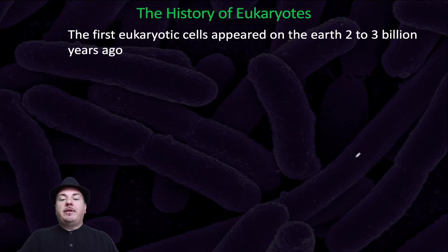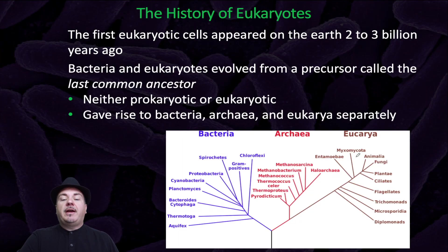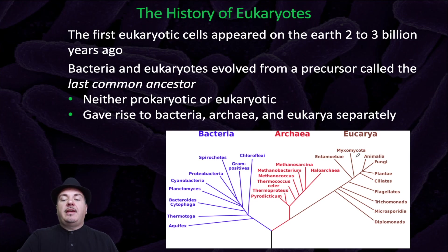The first eukaryotic cells appeared on the earth two to three billion years ago. Bacteria and eukaryotes evolved from a precursor called the last common ancestor. The last common ancestor was neither prokaryotic nor eukaryotic, and it gave rise to bacteria, archaea, and eukarya separately.